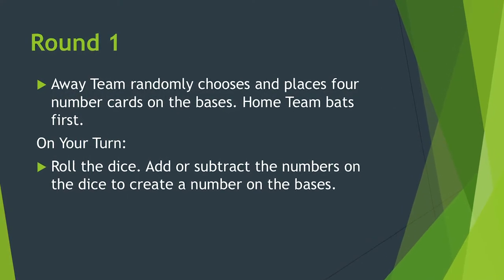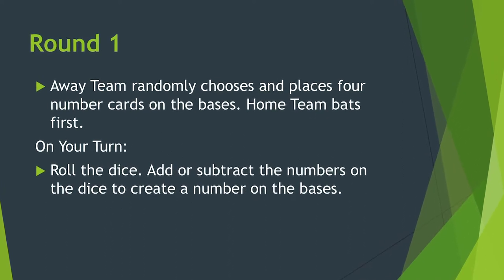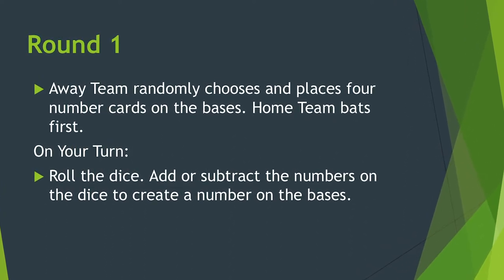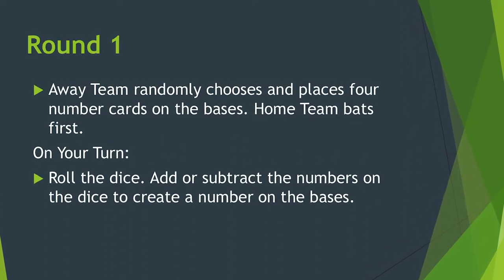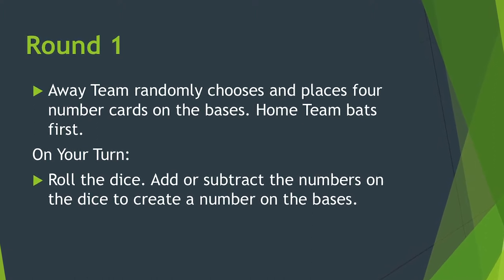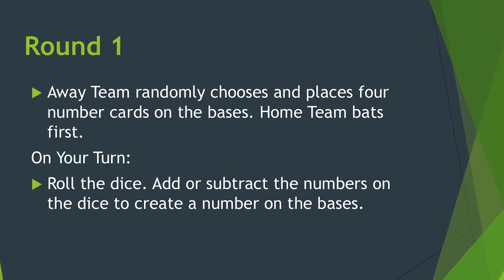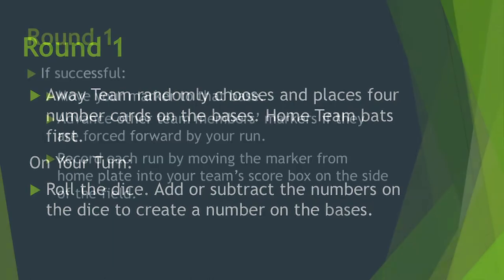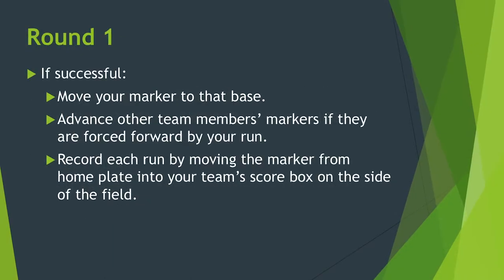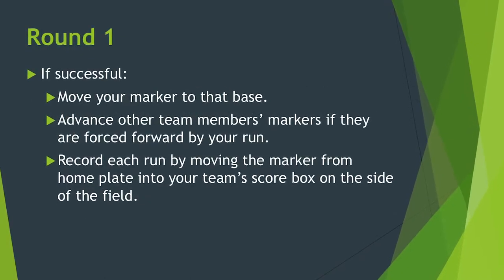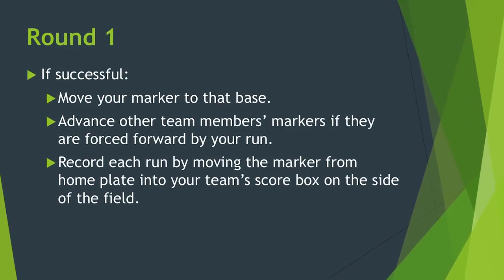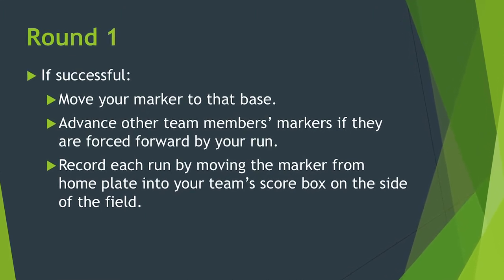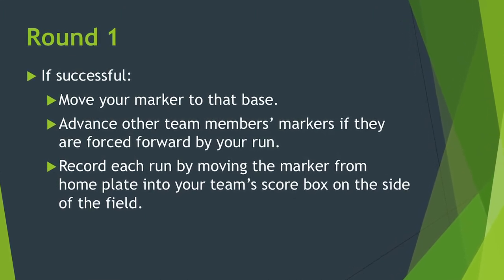The game is played in three rounds. In round one, the away team begins by randomly selecting four numbers and placing them on the bases. The home team bats first. On your turn, roll the dice. You can either add the two numbers or subtract them to create a number that equals one of the numbers on the bases.